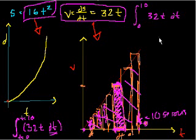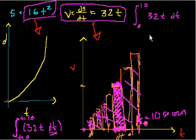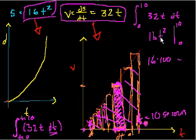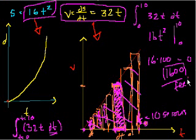And the way you evaluate this is you figure out the antiderivative — and you really don't have to do the plus c here. The antiderivative we know is 16t squared, right? It's one half t squared times 32, so that's 16t squared. And we evaluate this at 10 and we evaluate it at 0, and then we subtract the difference. So we evaluate at 10: 16 times 100. And then we subtract it evaluated at 0: 16 times 0 is 0. So after 10 seconds, we would have gone 1,600 feet. And also, the area under this curve is 1,600.